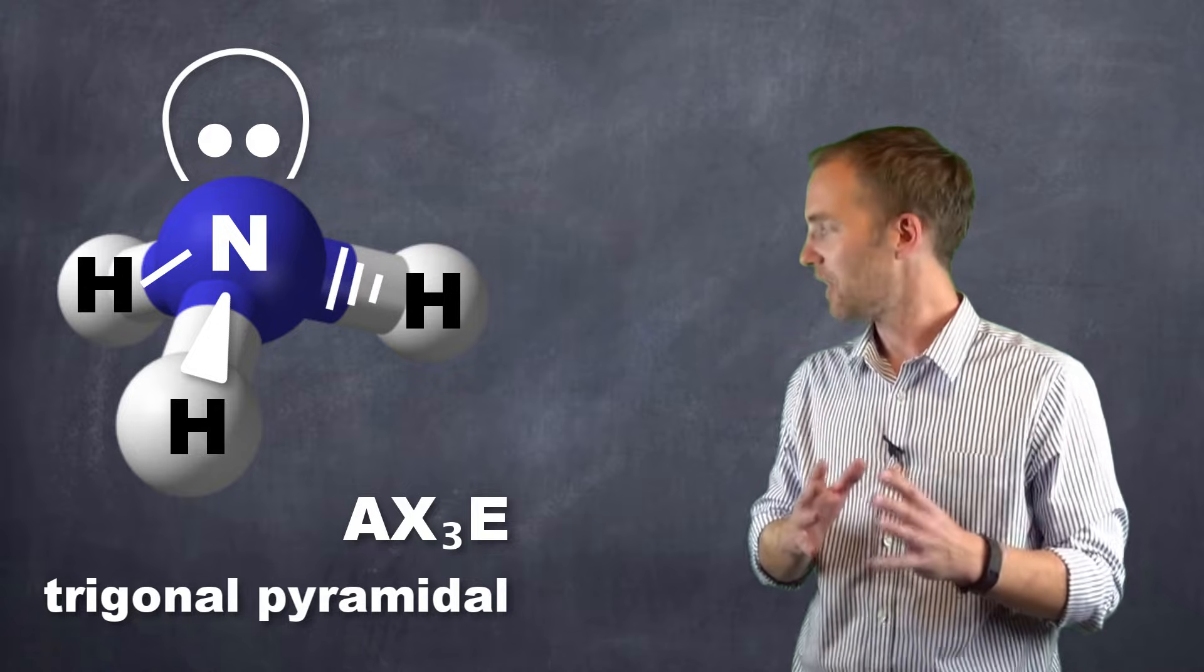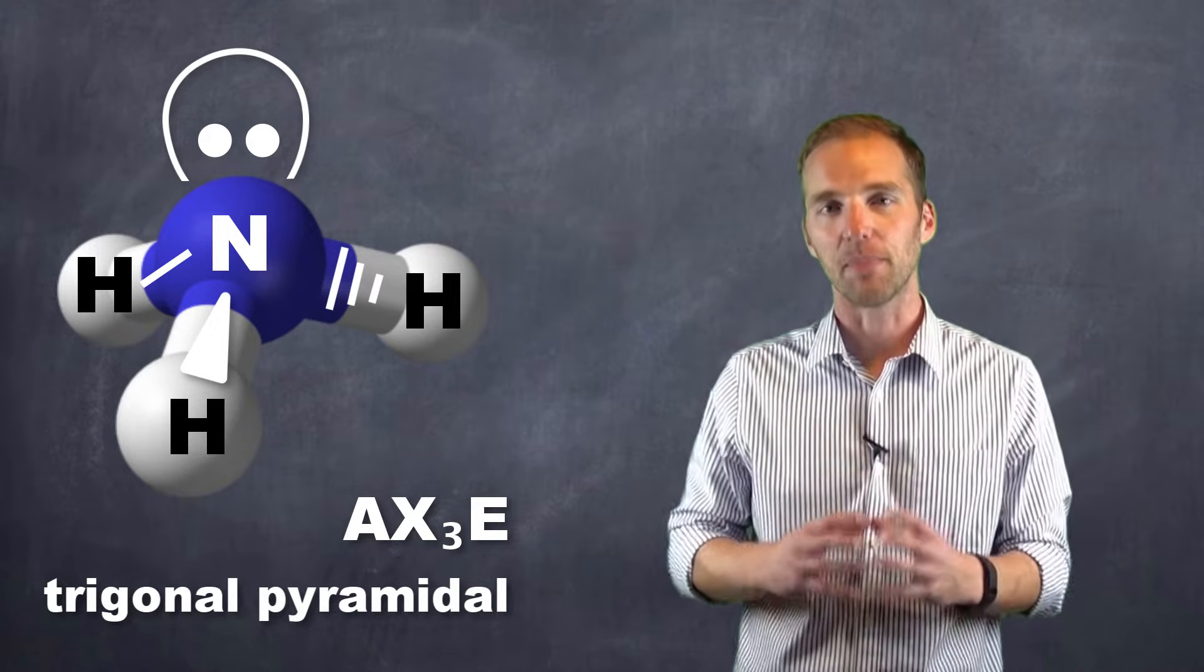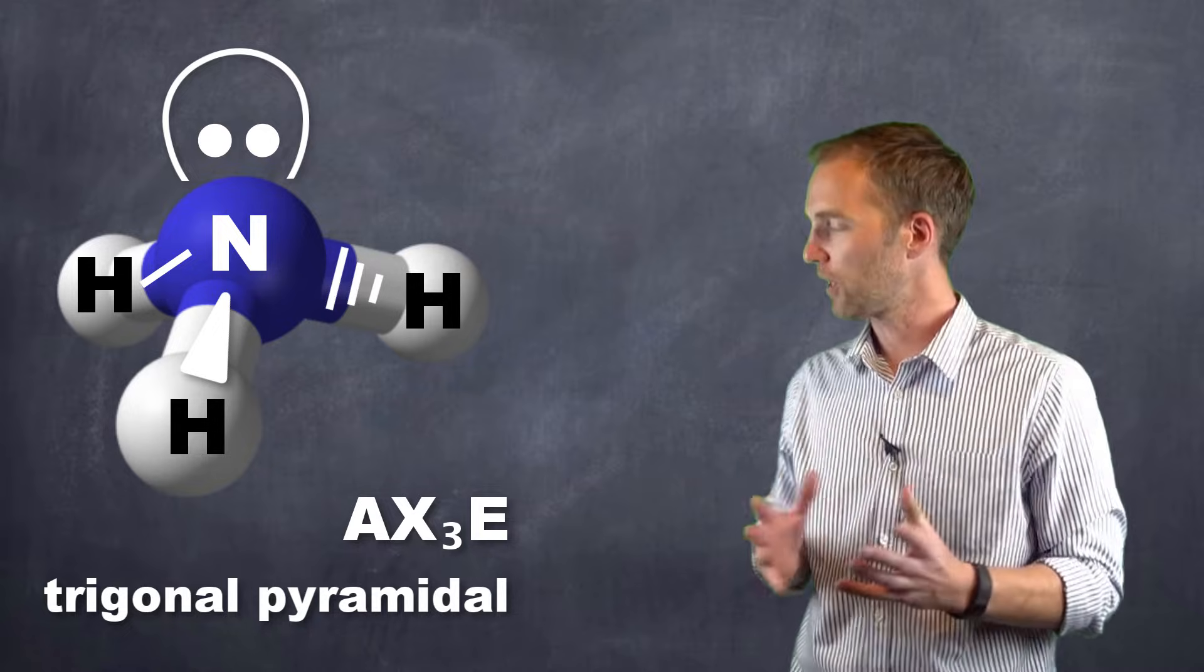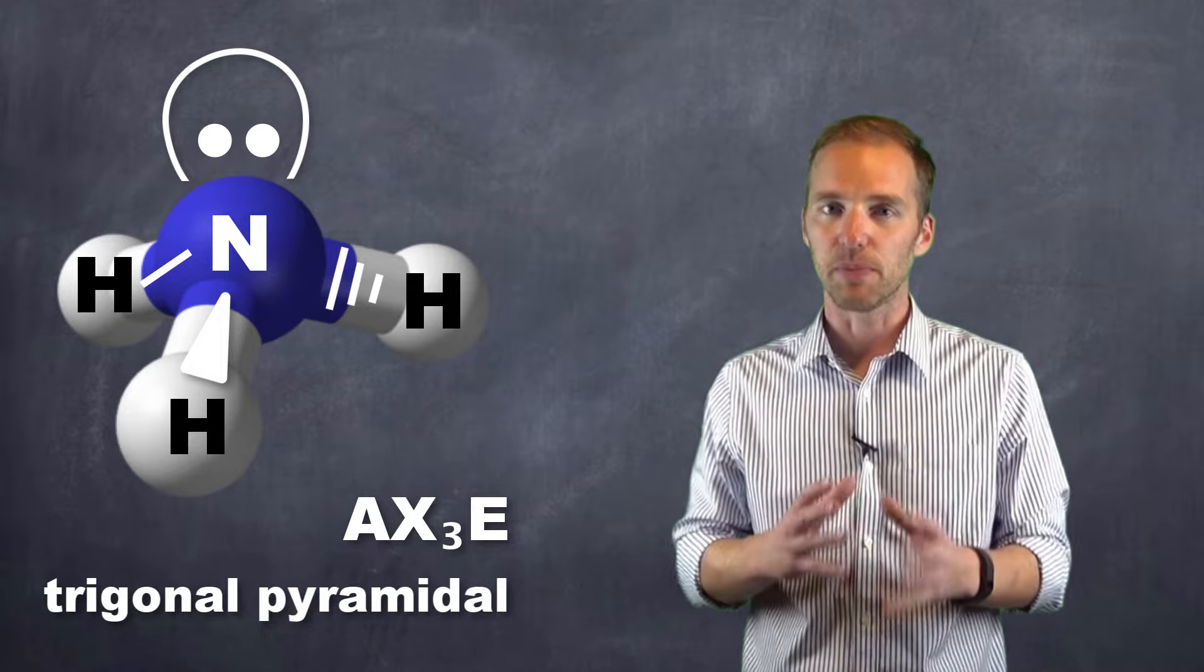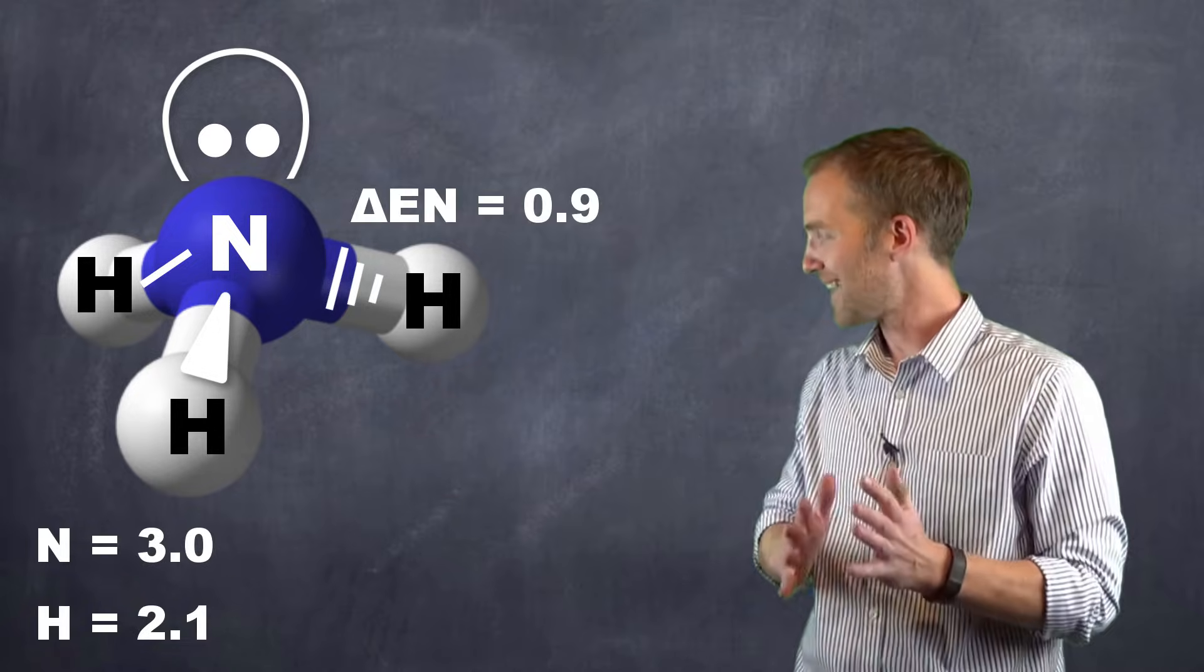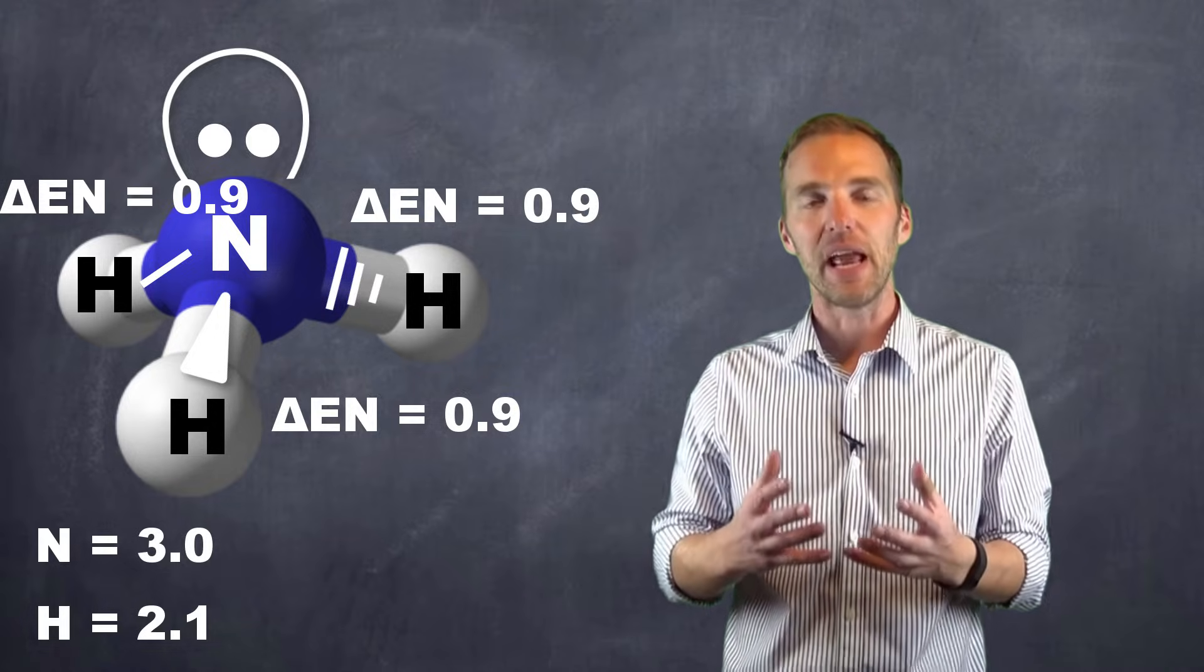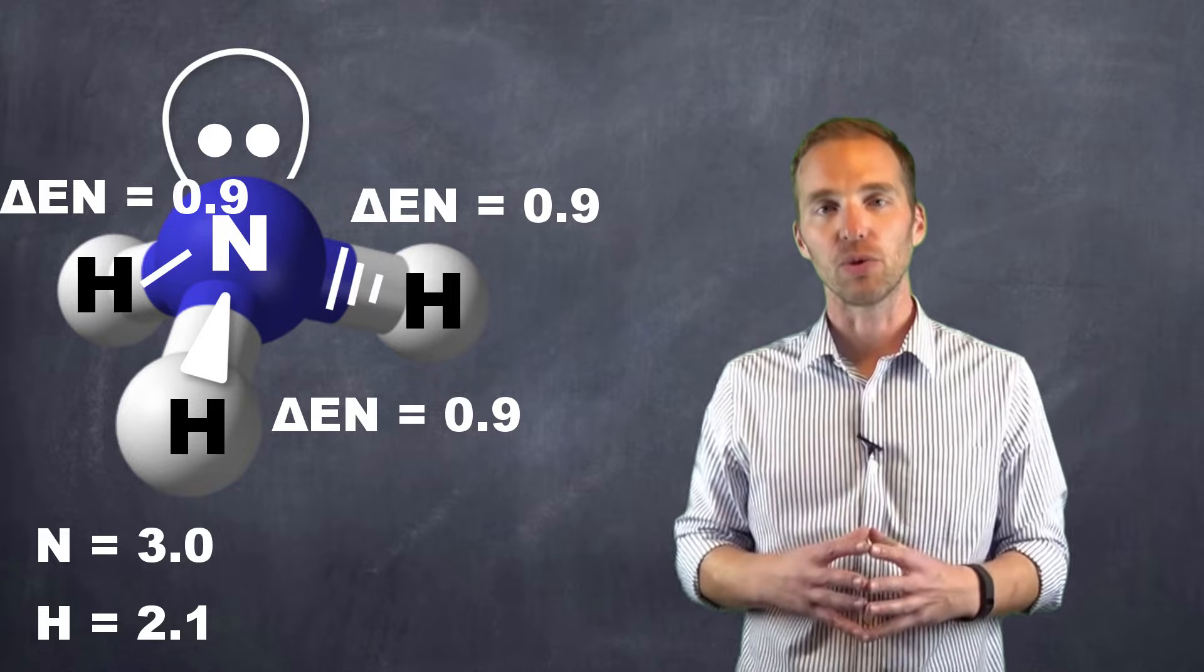But they do impact the overall shape, and therefore how all of these arrows are going to add up to give us the overall polarity of the molecule, if any. Now what we do is we calculate the individual electronegativity difference between each one of these. And we can see that if we do that, the nitrogen has a slight electronegative charge, while the hydrogens at the terminal ends are slightly electropositive.